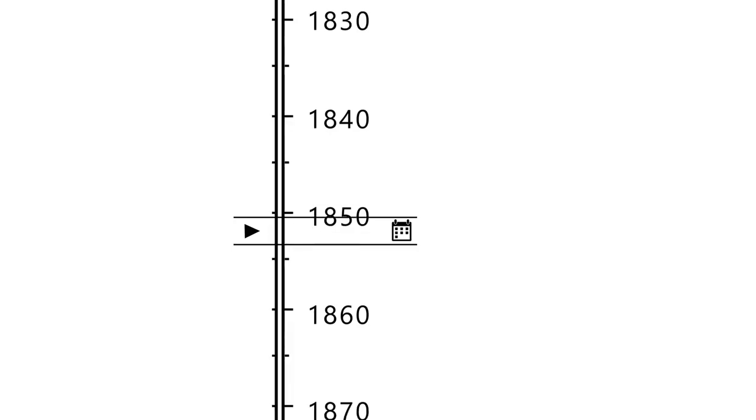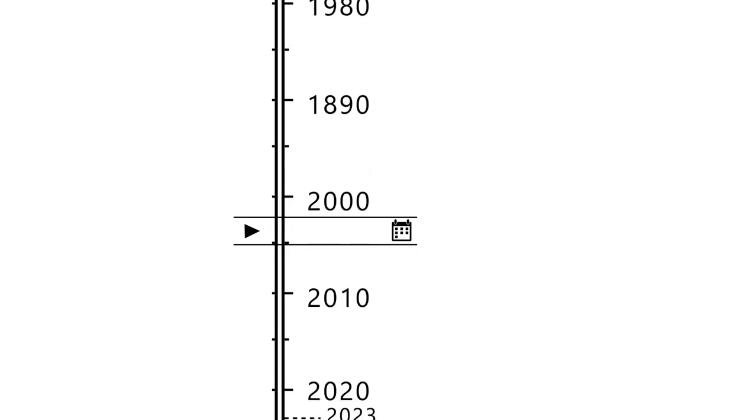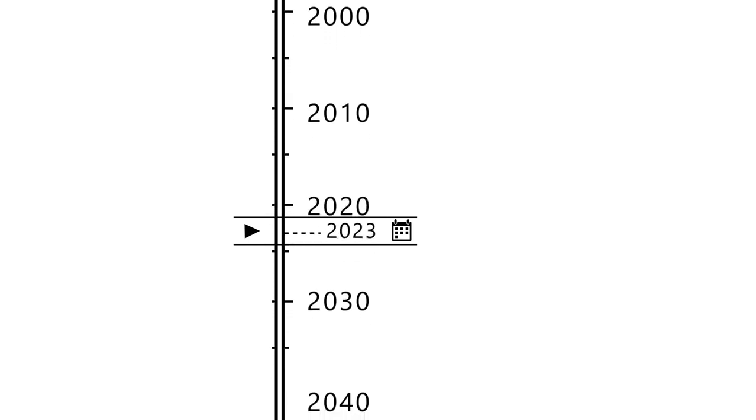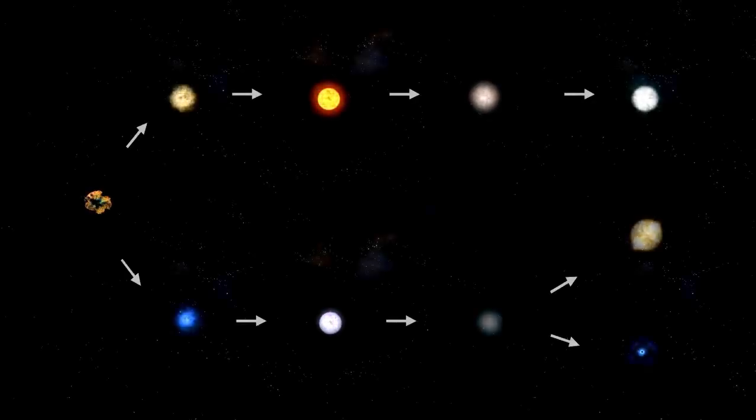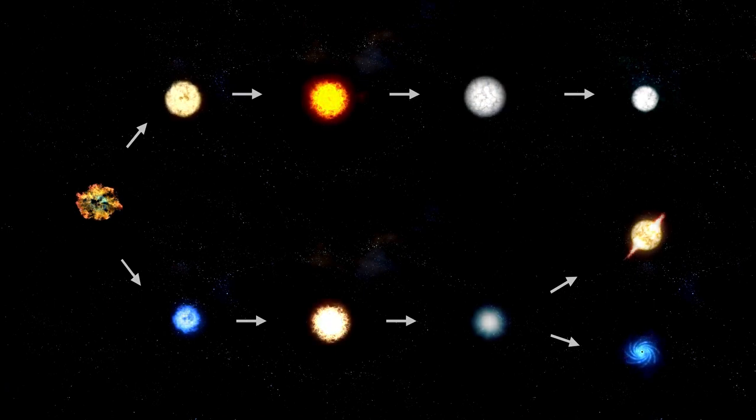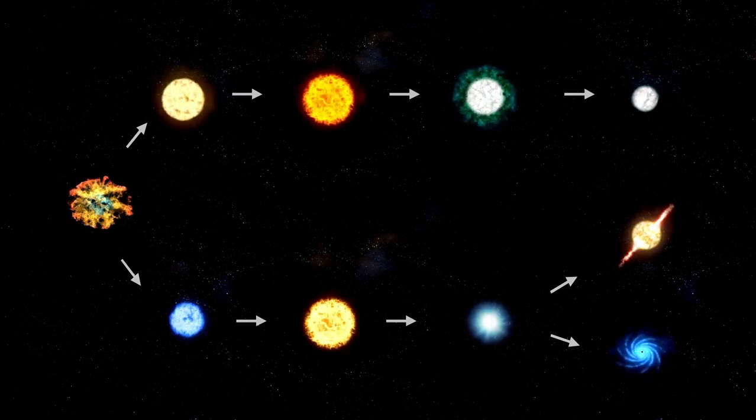Betelgeuse is classified as a semi-regular variable star, meaning it experiences multiple cycles of fluctuating brightness due to variations in its size and temperature.